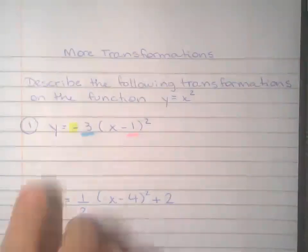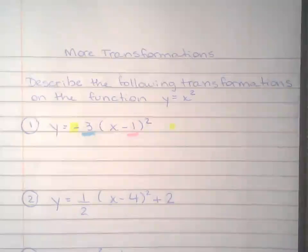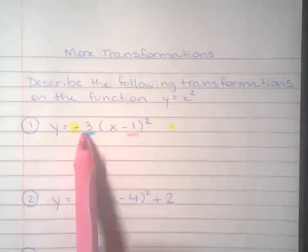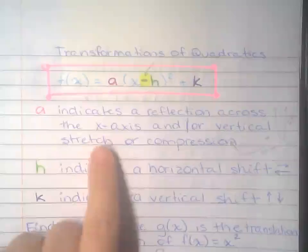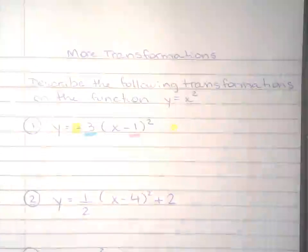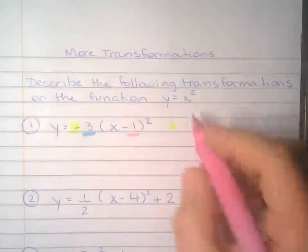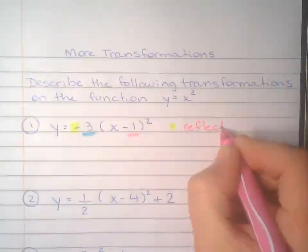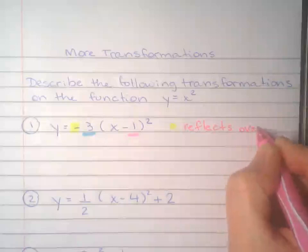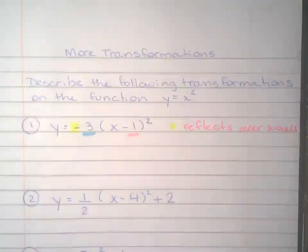So start with that negative. That negative says, we know that this number right there in front of the x squared is a. A indicates reflection across the x-axis if it's negative. Vertical stretch or compression. So this negative right here is a. So it reflects over the x-axis. And I'm going to show you in the calculator when we're done with all of this.